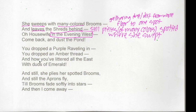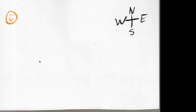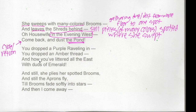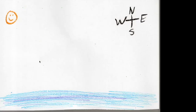Housewife in the evening west — those are some important clues. The mention of 'west' is interesting, and the fact that it says 'evening' does give us a clue. Here I've drawn north, south, east, and west, with my housewife in the west, smiling away. 'Come back and dust the pond' — this is significant because we've got the idea of a cycle or a return. She is going away but we want her to come back. It does mention a pond, so I drew a pond at the bottom of my picture.